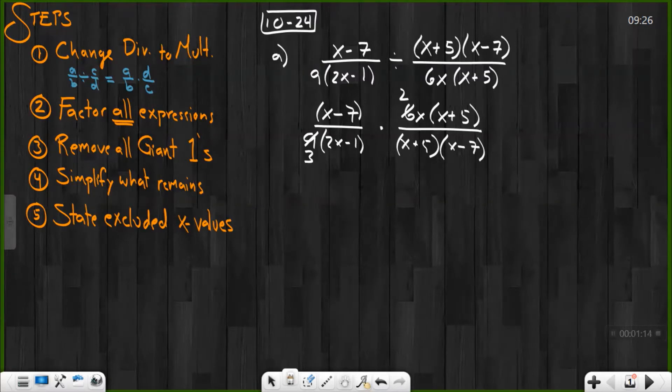I have an x on top but no x's on the bottom that are outside my parentheses. So now let's look at groups. I have an x minus 7 on top and bottom and x plus 5 on top and bottom.